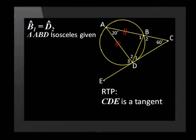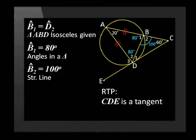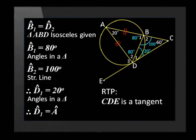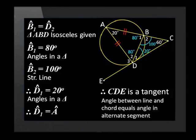B1 and D2 are both 80 degrees. Using the axiom that angles on a straight line sum to 180 degrees, we calculate angle B2 to be 100 degrees. We can calculate that angle D1 is 20 degrees using angles in a triangle. And notice that angle D1 is equal to angle A. This then completes our proof, and we state that the line CDE is a tangent because the angle between the line and chord equals the angle in the alternate segment.